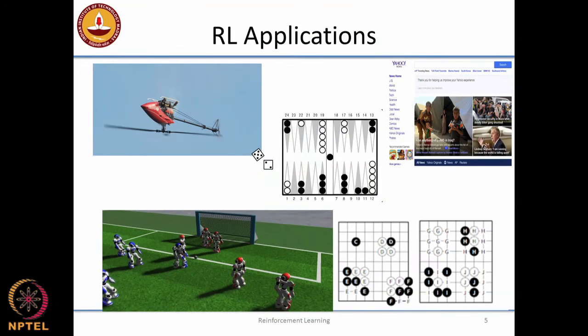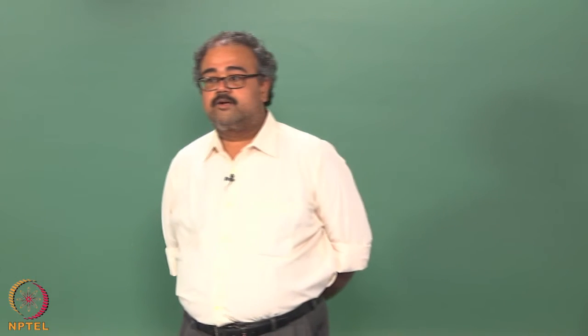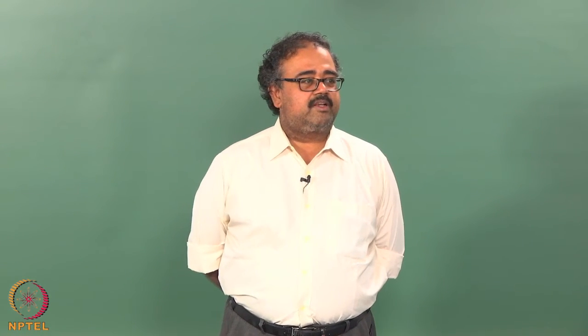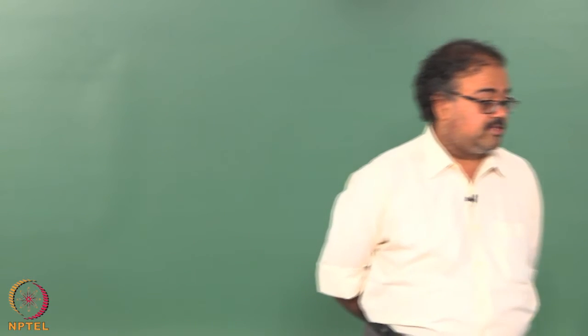Reinforcement learning has been used fairly successfully in a wide variety of applications. One example is a helicopter flying upside down — the group at Stanford and Berkeley actually used reinforcement learning to train a helicopter to fly all kinds of tricks. It was considered the showpiece application for reinforcement learning — getting such a complex control system to work. It could actually do things at a much finer level of control than a human being, and the tricky part was how it learned to control this complex system without any human intervention.